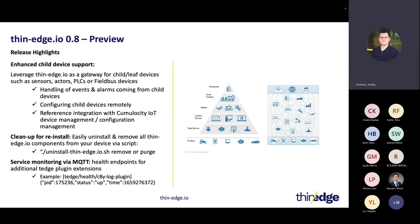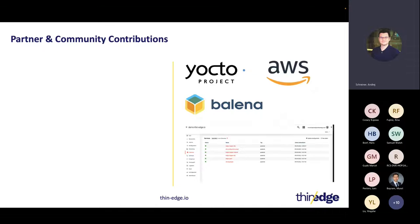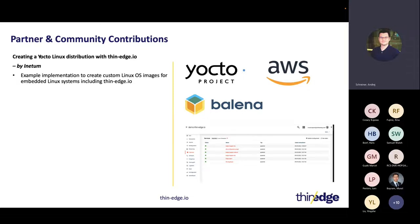Last but not least, we further enhanced the service monitoring options via MQTT, which is very useful if you plan to extend and add new logic to Thin-Edge. You can use health endpoints for Thin-Edge plugin extensions, which allow you to check the state of a Thin-Edge service and build your logic on top of that information. Today you'll see exciting demos, and I want to highlight partner and community contributions. In many IoT projects, vendors prefer to build custom Linux images using the Yocto project — a Linux Foundation project. To ensure Thin-Edge.io can be part of those custom images, our partner Inetum have created an example integration of Thin-Edge.io with Yocto.